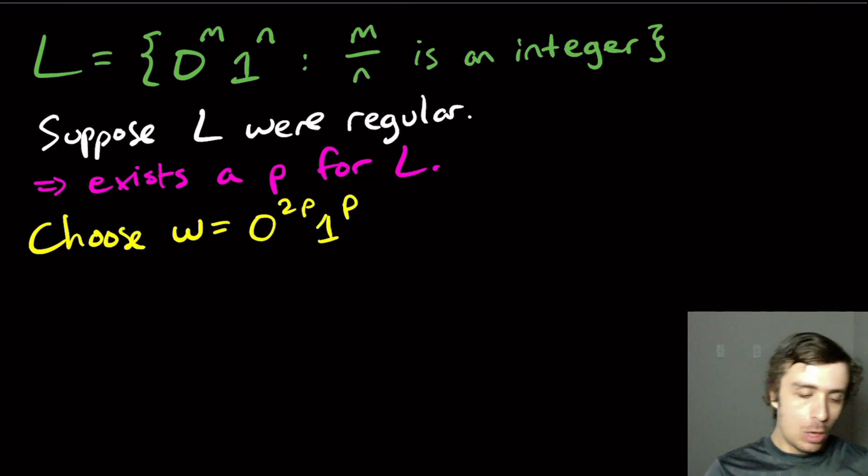So why would this string not be a good choice? So let's think about what happens. What we want to do is we want to pump this string so that we get a string that is not in L. So in other words, the number of zeros is not a multiple of the number of ones. But in order to do that, we have to pump in the zero part because that's one of the conditions of the pumping lemma. So if I increase the number of zeros, then it might be that we increase it by p zeros every single time. And that is a valid decomposition of the string according to the rules.